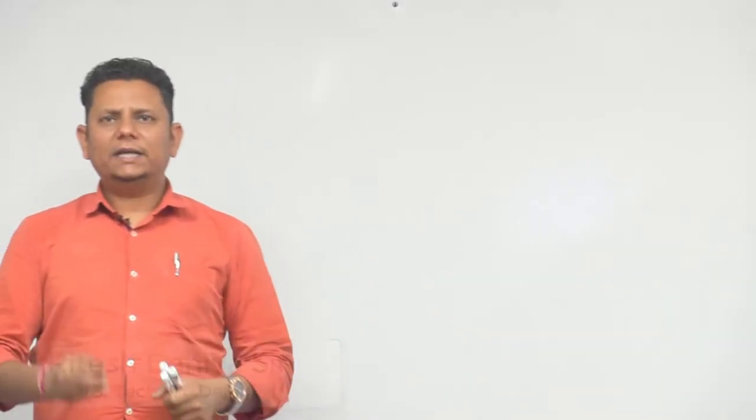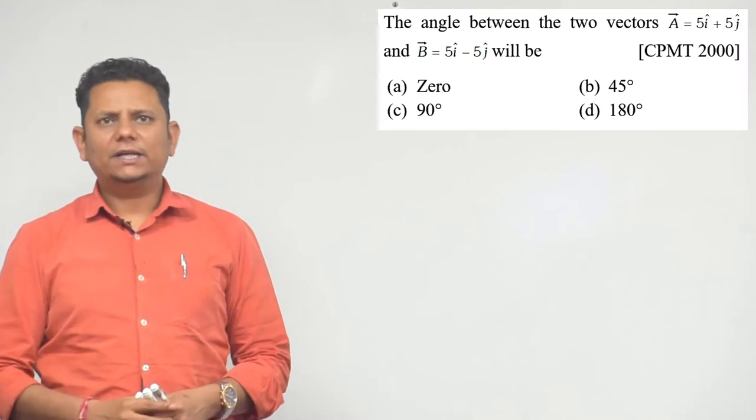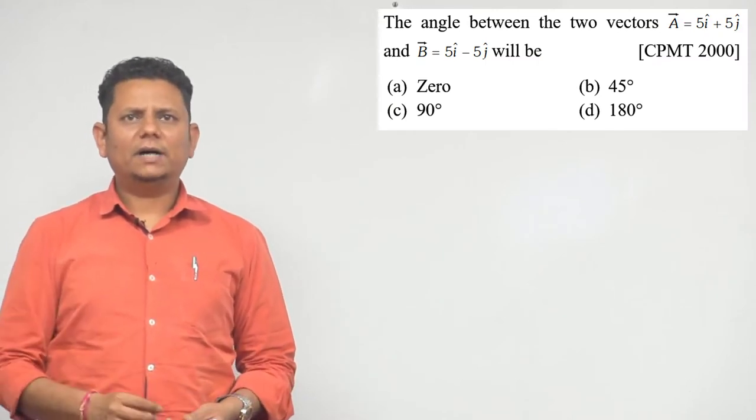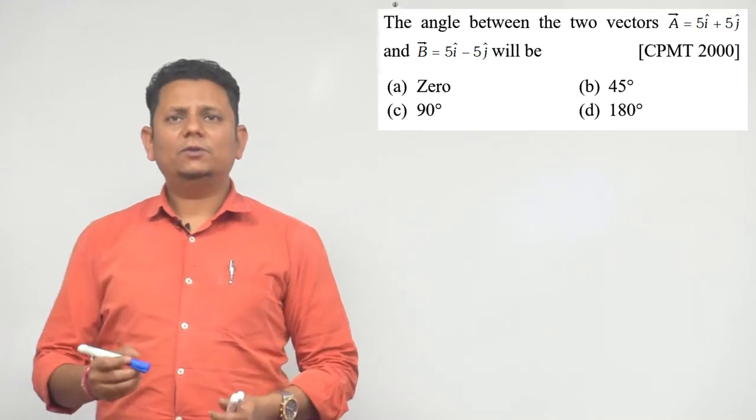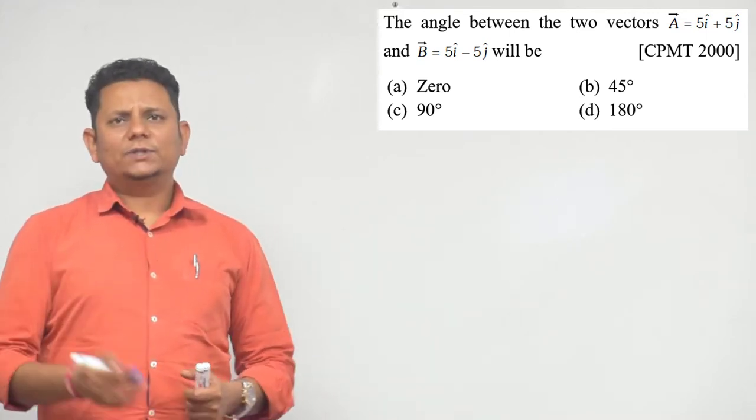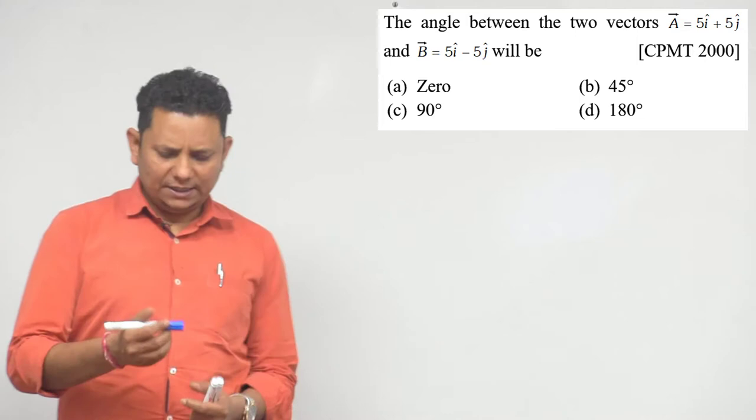Next question: The angle between two vectors a = 5i cap plus 5j cap and b = 5i cap minus 5j cap will be. We have two vectors and we need to find the angle between them. The options are 0, 45, 90, 180 degrees.